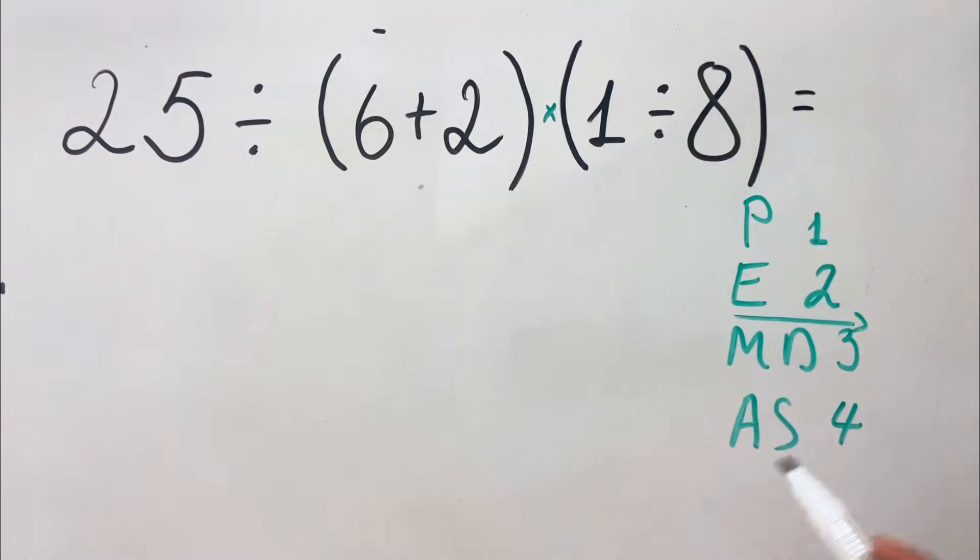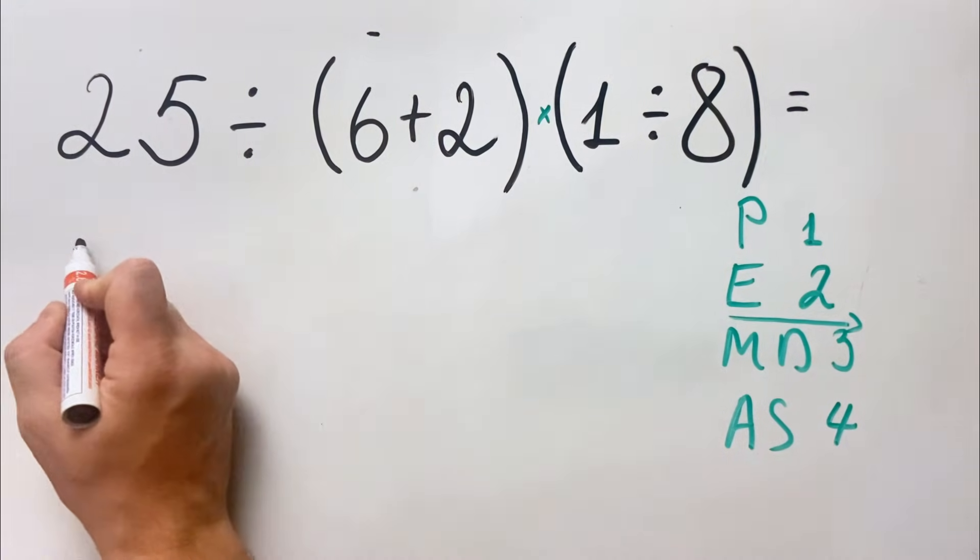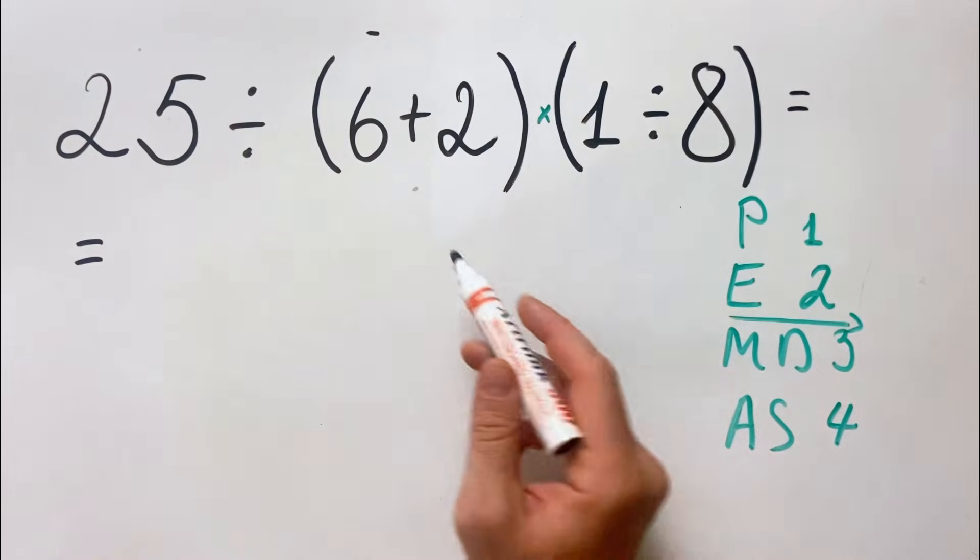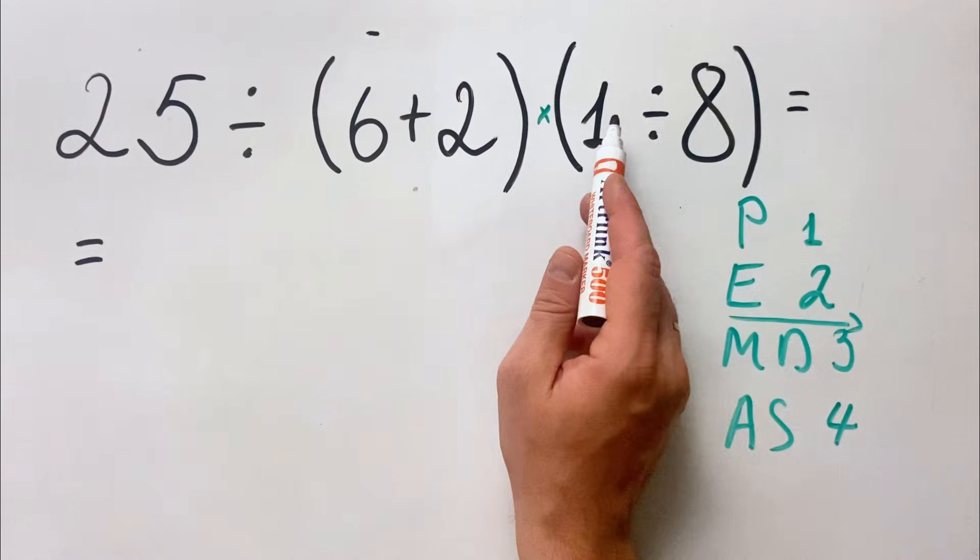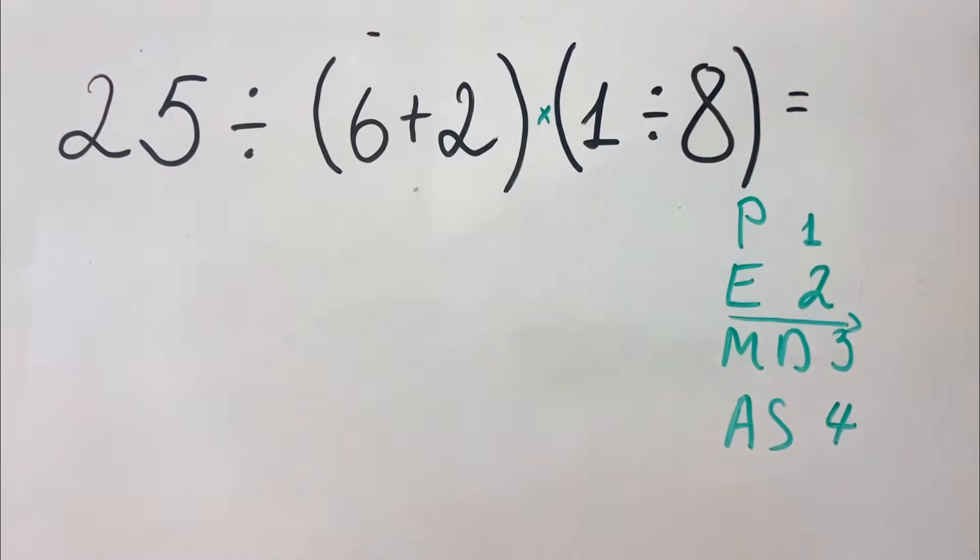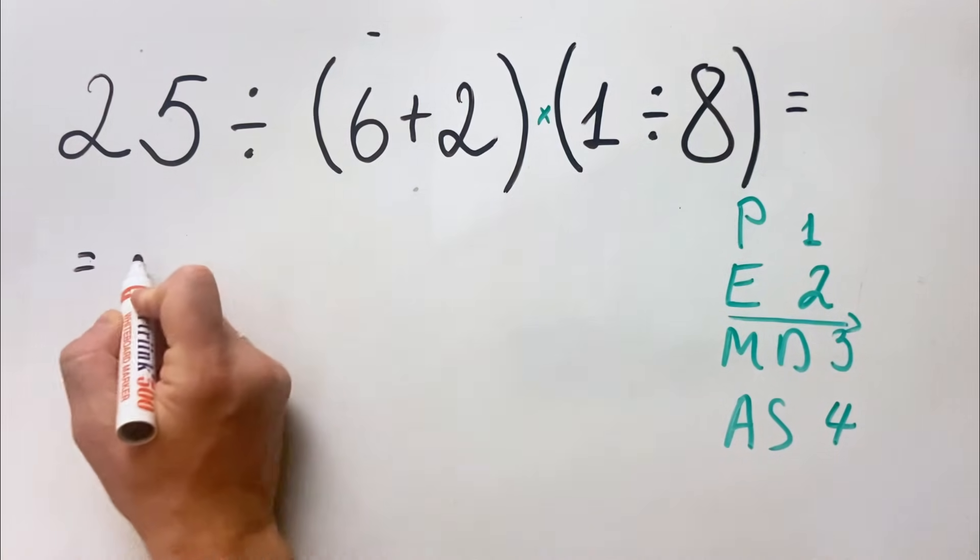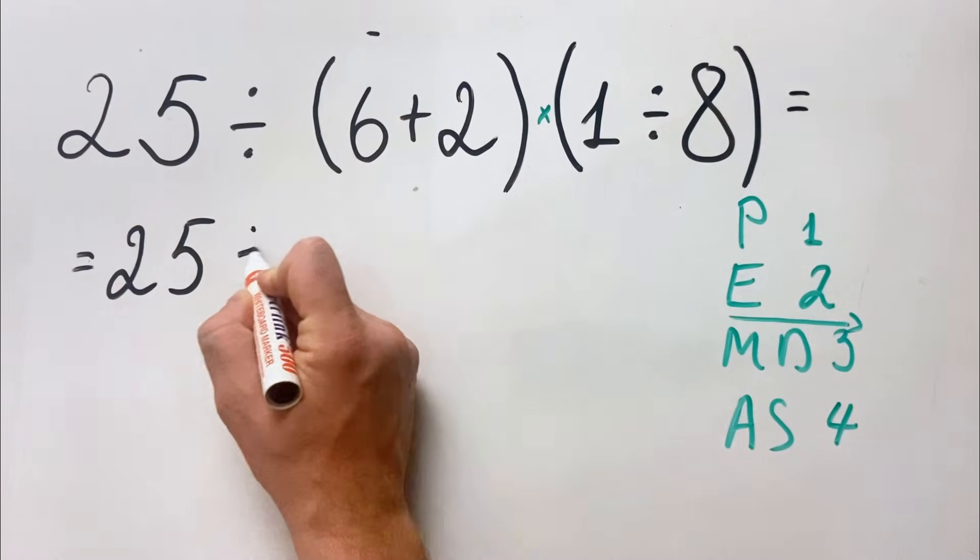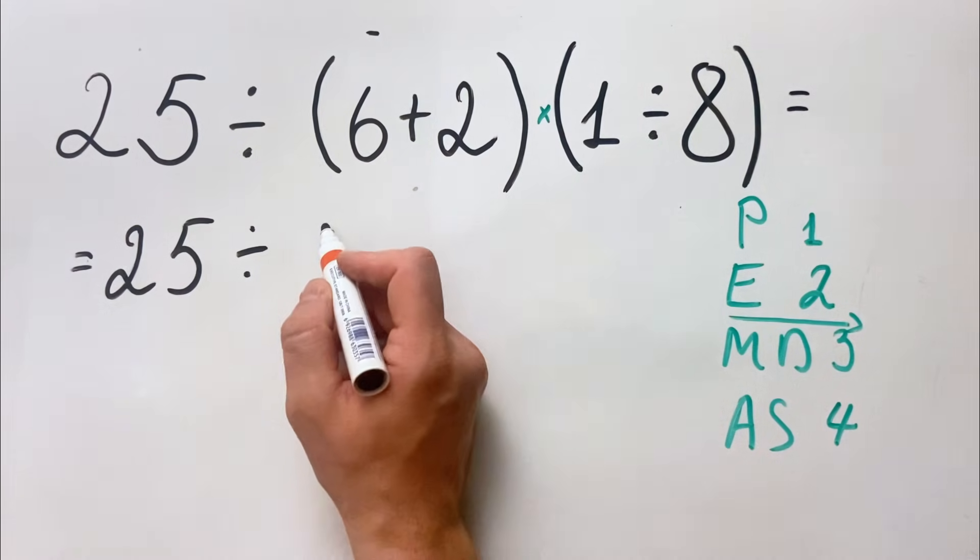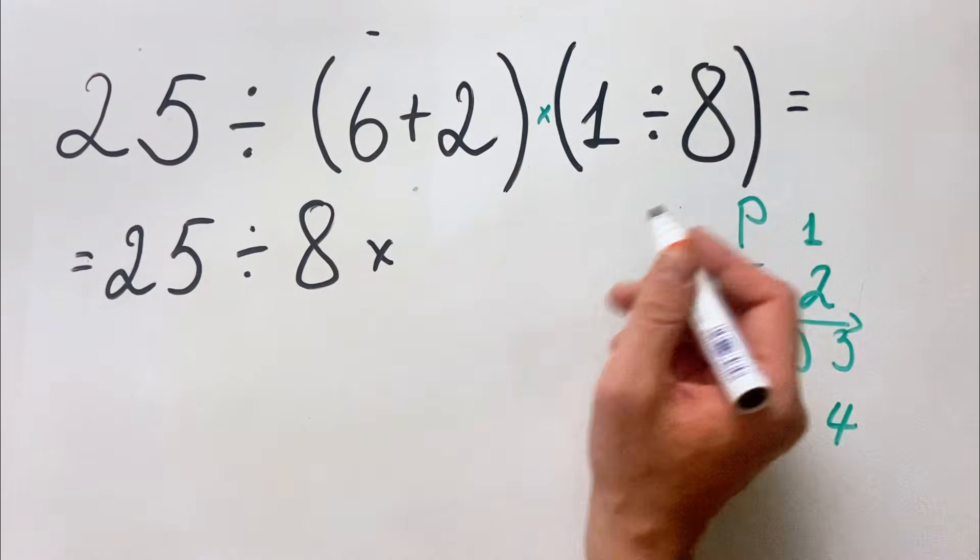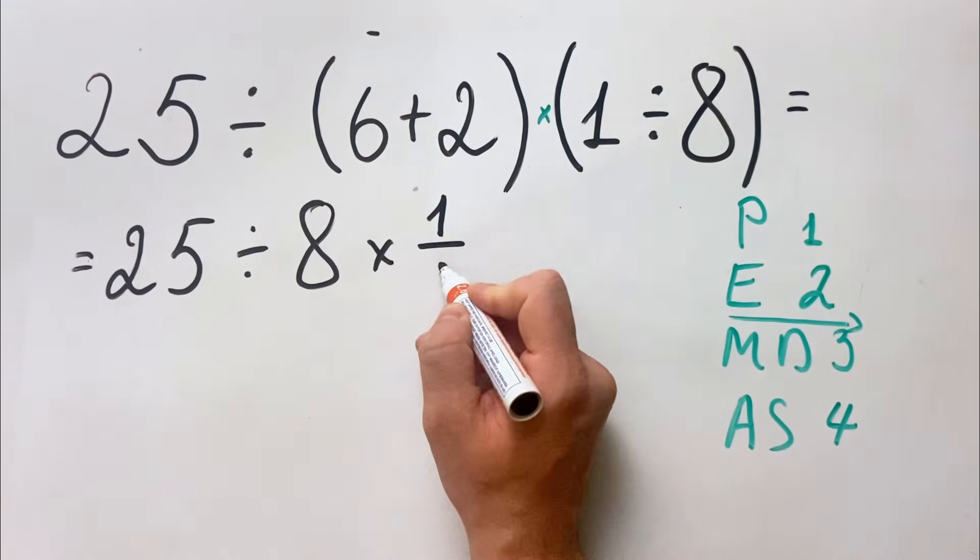Okay, so what we get. First, as we said, we do what's inside the parentheses, so we'll do first 6 plus 2, then 1 divided by 8. So we have 25 divided by 6 plus 2 equals 8, multiply 1 divided by 8 is 1 over 8.